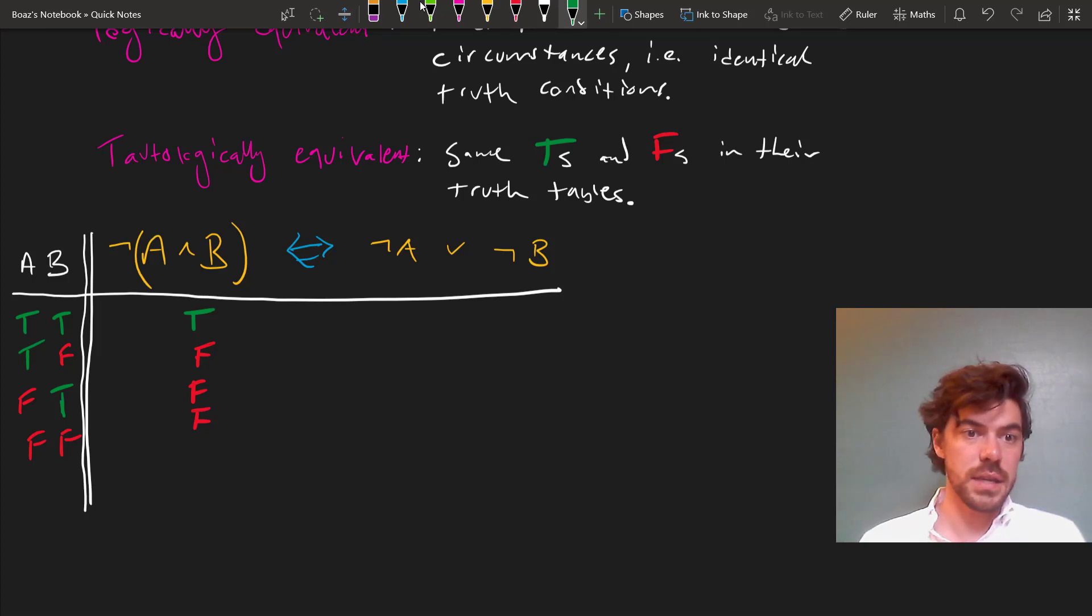But the main symbol here is the negation sign, which again has the fewest, which is to say no parentheses around it and isn't trumped by a binary connective. So we flip these values.